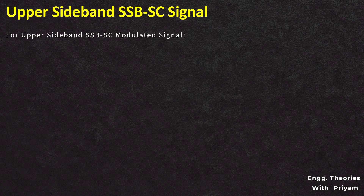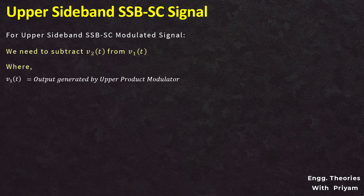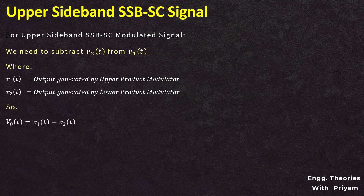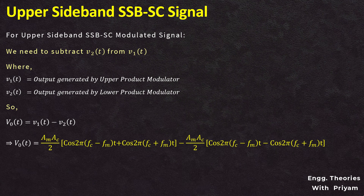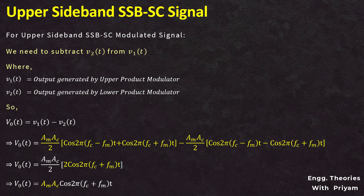To obtain the upper sideband SSBSC modulated signal, we subtract V2(t) from V1(t): V0(t) = V1(t) − V2(t). Simplification results in (AM·AC/2)·2·cos(2π(fC+fM)t), which simplifies to V0(t) = AM·AC·cos(2π(fC+fM)t). This is the equation of the upper sideband SSBSC modulated signal.